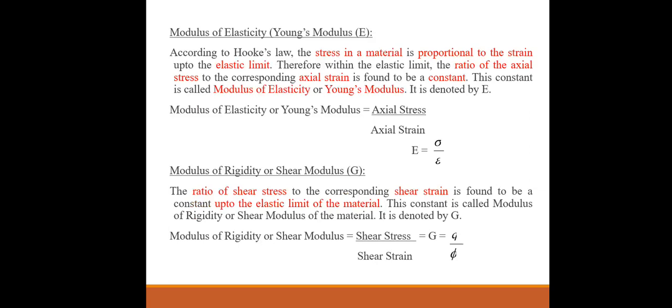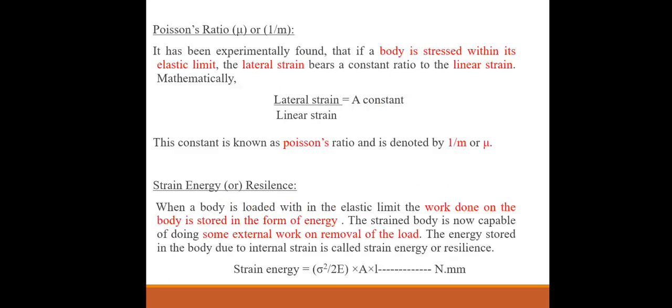Modulus of rigidity or shear modulus, denoted by G. The ratio of shear stress to the corresponding shear strain is found to be a constant up to the elastic limit of the material. This constant is called modulus of rigidity or shear modulus. Modulus of rigidity G equals shear stress divided by shear strain.